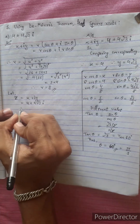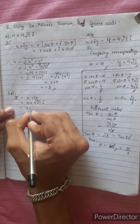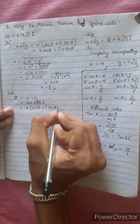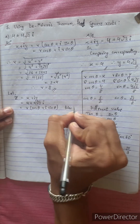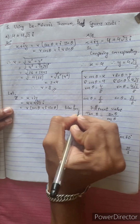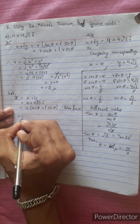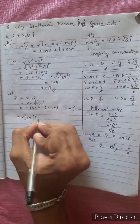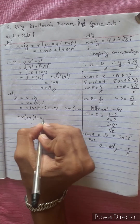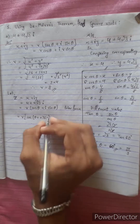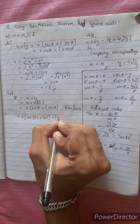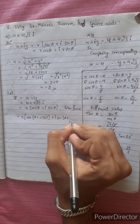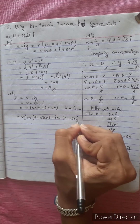The polar form is r cos theta plus i sin theta. The general polar form is r cos(theta plus n times 360) plus i sin(theta plus n times 360 degrees).